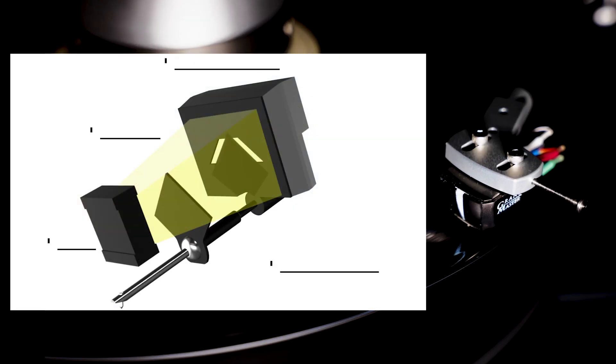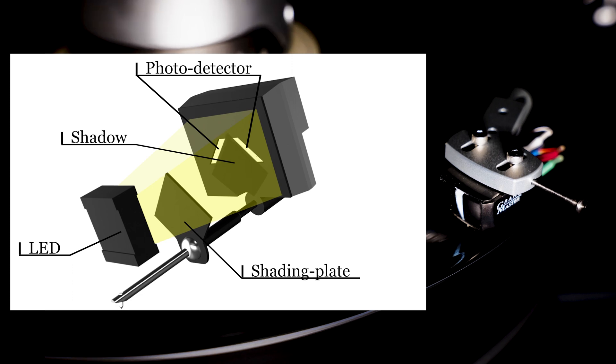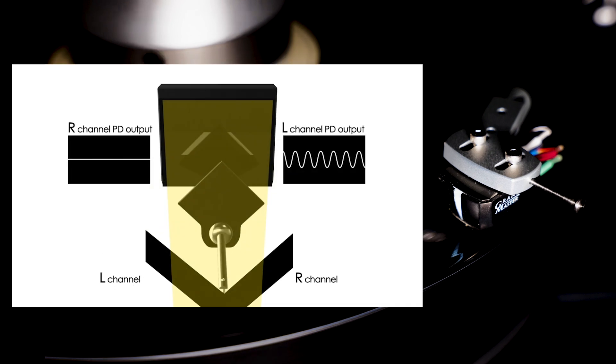As the cantilever moves, the shading plate vibrates and this causes a change of the brightness between the LEDs and photodetectors. This change in brightness is output as an analog signal from the photodetector.